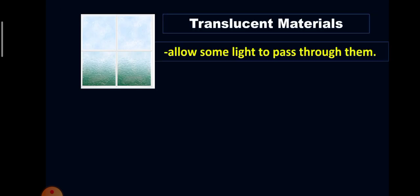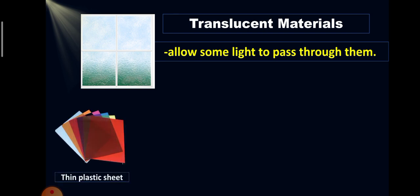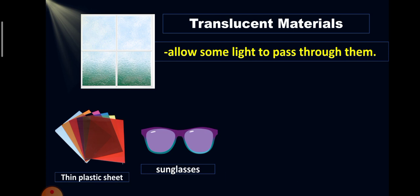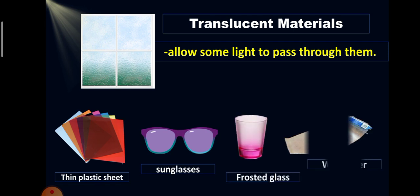Translucent materials allow some light to pass through them. When an object is behind translucent materials, you cannot identify exactly the object, but you know that something is there. Other examples of these kind of materials are thin plastic sheet, sunglasses, frosted window or frosted glass, and wax paper.